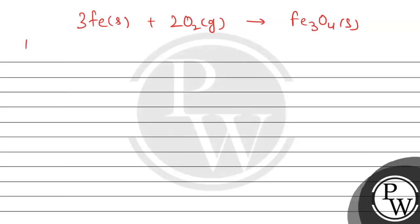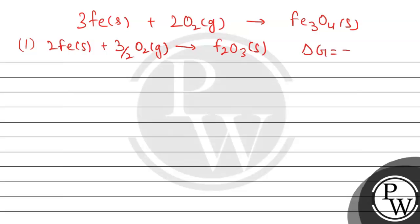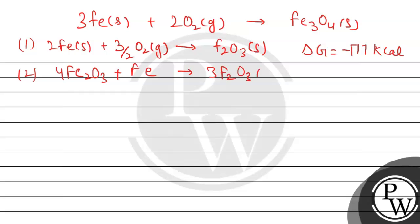The reaction given to us is: Iron plus 3/2 O₂ leads to the formation of Fe₂O₃ solid, and we have delta G equals minus 177 kilocalorie. The next reaction given is: 4 Fe₂O₃ plus iron leads to the formation of 3 Fe₃O₄ solid, for which delta G equals minus 19 kilocalorie.